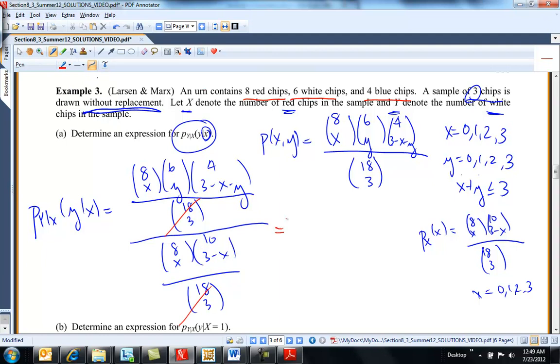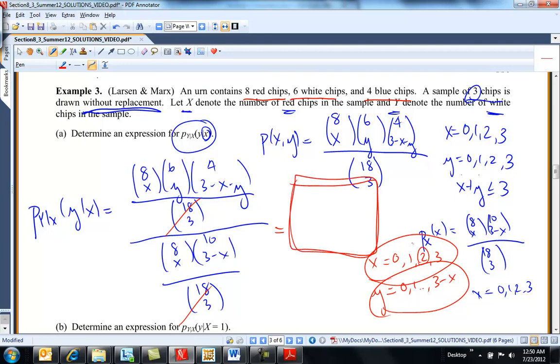So what you know then when you get your support, X is going to be defined for 0, 1, 2, and 3. And then Y equals 0, 1 up to 3 minus X. I mean, Y is dependent on X. If X is equal to 2, then Y can only be 0 or 1. So your support's written a little bit differently now. X can be 0, 1, 2, or 3. And Y is 0, 1 up to 3 minus X. So you should get a very, well, a nicer expression here. That's the conditional.